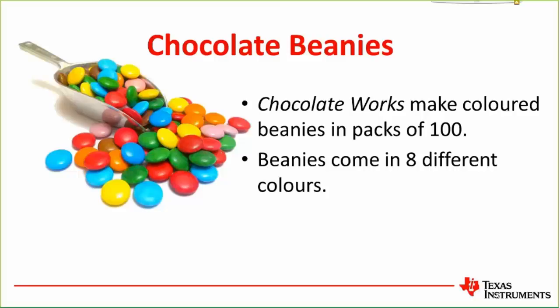They make beanies in eight different colors — red, green, blue, orange, and others — and mix them all together, so we can assume the population is approximately infinite. We assume they're distributed evenly, so we'd expect one-eighth of the beanies in a packet to be blue, one-eighth to be red, and so on.